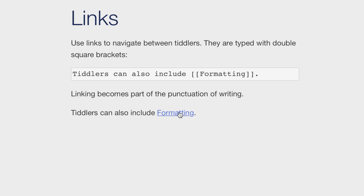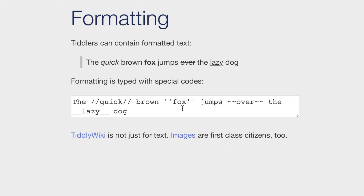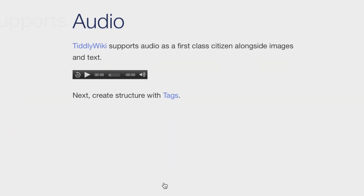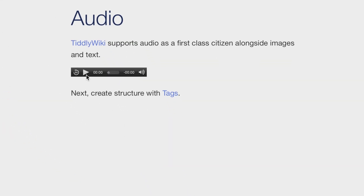Tiddlers can also include formatting. Formatted text is typed with special codes like this. But TiddlyWiki is not just for text — images are first class citizens too. TiddlyWiki even lets you edit images. TiddlyWiki also supports audio, which is a first class citizen alongside images and text.